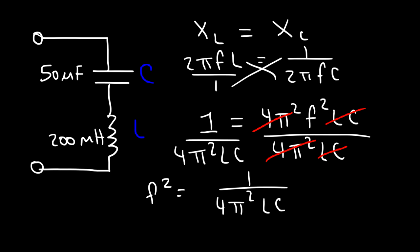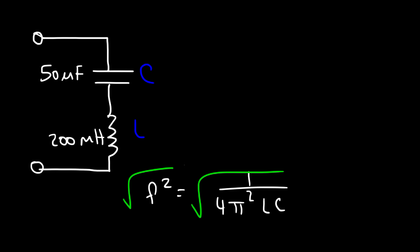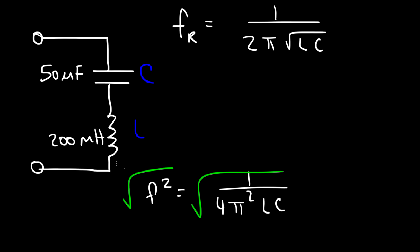Now we need to take the square root of both sides. The square root of f² is simply f. The square root of 4 is 2. The square root of π² is π. And so this formula gives us the resonant frequency of an LC circuit.